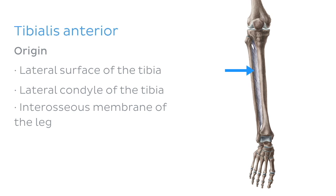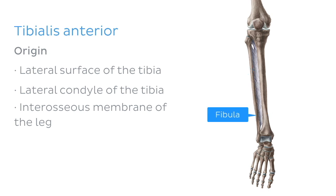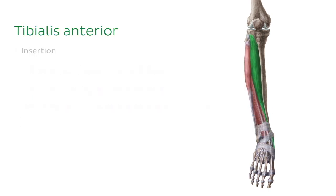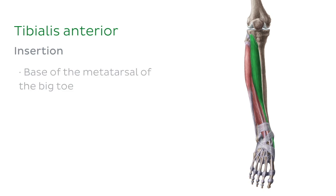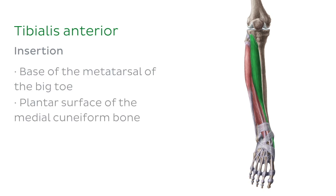The interosseous membrane is a thin sheet of fibrous connective tissue linking the two bones of the leg, the tibia and the fibula. The tibialis anterior then goes on to insert at the base of the metatarsal of the big toe and the plantar surface of the medial cuneiform bone, which is one of the tarsals.